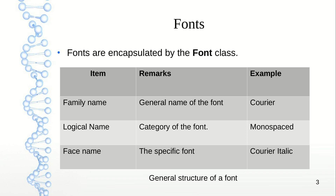Java hides the details of fonts using a separate class called the Font class itself. Every font has got three details. The first is the family name, the second is the logical name, and the third is the face name. The family name shows the general name of the font, something like Courier or Times New Roman. The logical name gives the category of the font — an example is monospaced. And finally, the face name gives the actual font itself, something like Courier Italic.